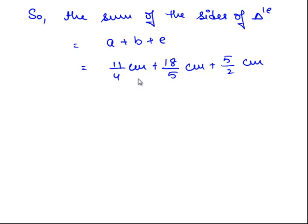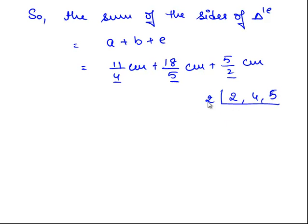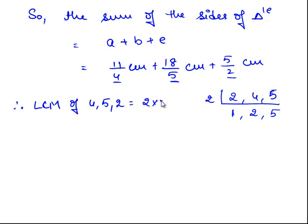Now we need to add 3 fractions with different denominators. To add fractions with different denominators, we need to obtain a common denominator by finding the LCM of 4, 5, and 2. Since 2 and 4 are multiples of 2, we take the prime factor 2. So 2 goes into 2 once and into 4 twice, and 5 remains the same. Therefore, LCM of 4, 5, and 2 is 2×2×5, which equals 20.